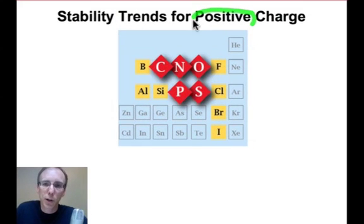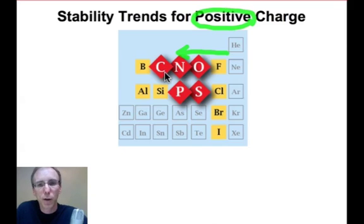For positive charge, stability trends run just the opposite of those for anions. Traveling across the periodic table from fluorine to nitrogen, stability increases up to the point where we get to carbon. We're going to learn that there's something very special about the structure of positively charged carbon that breaks this trend.